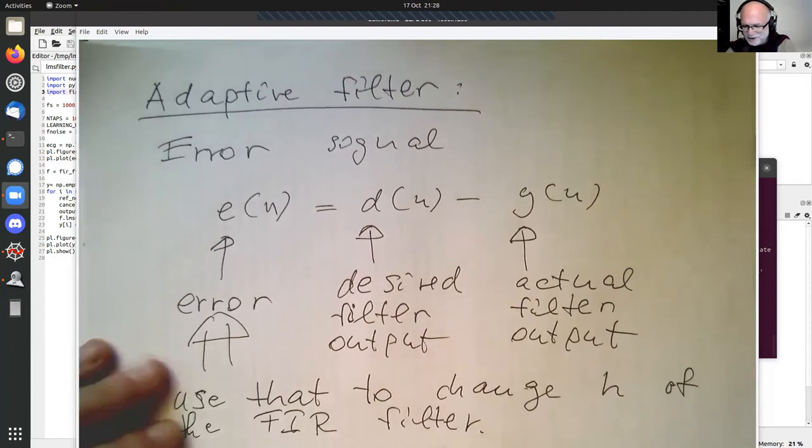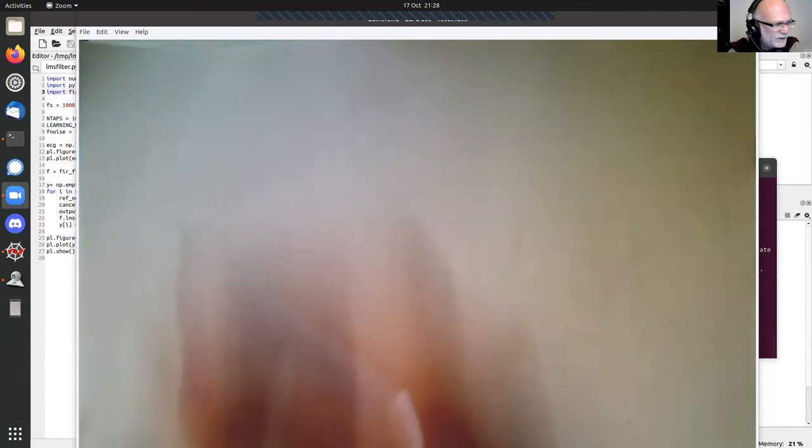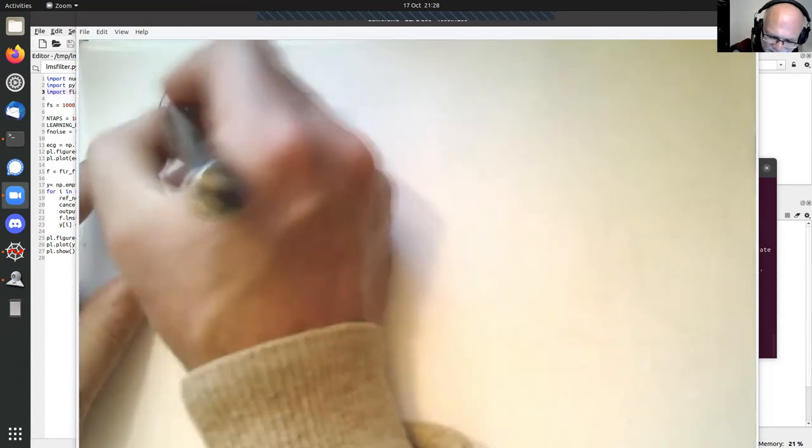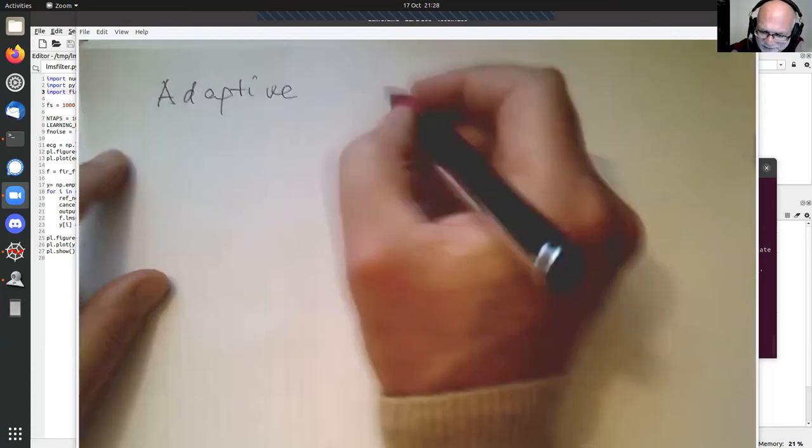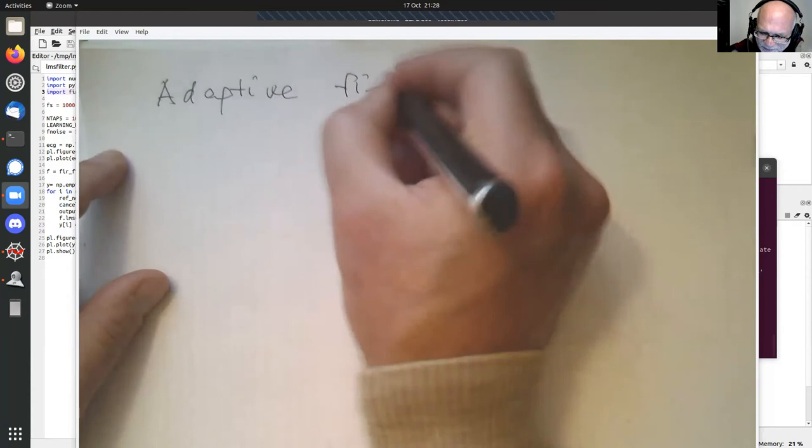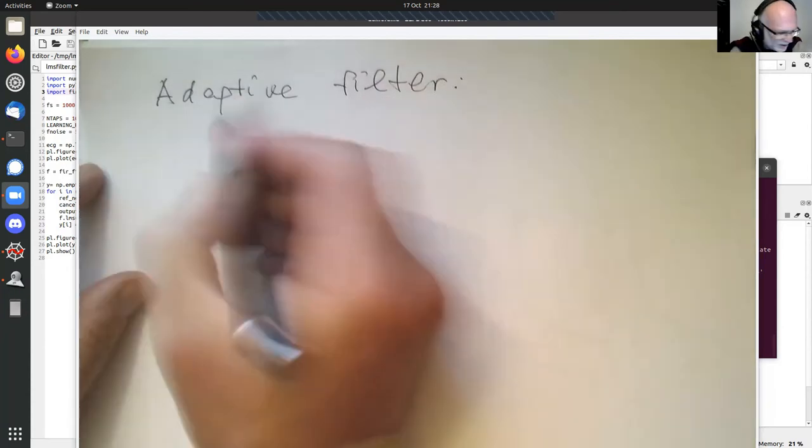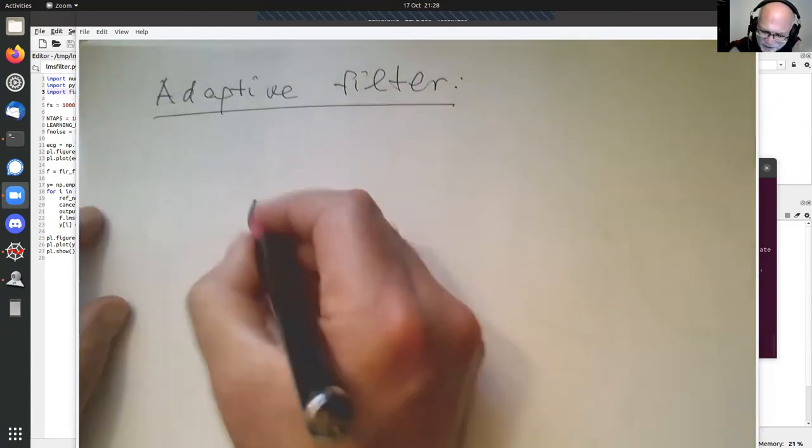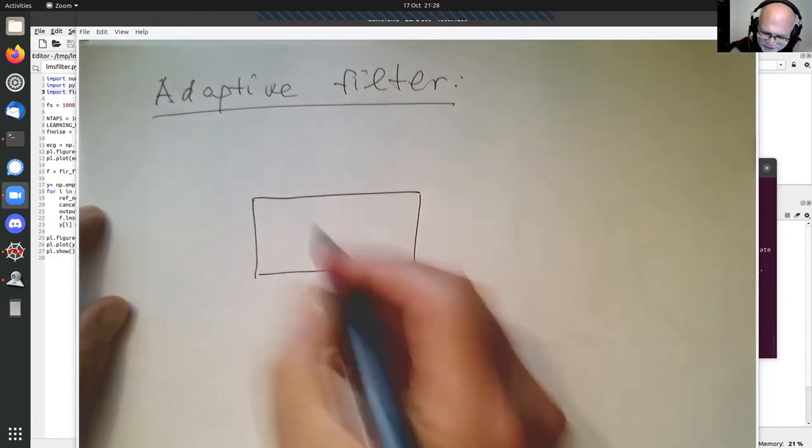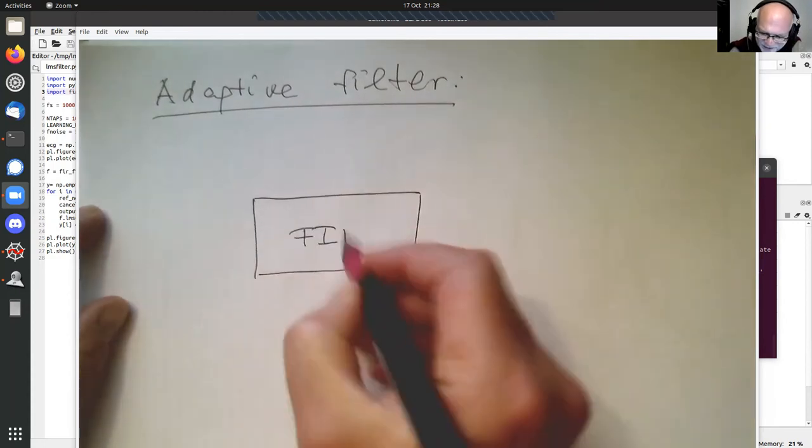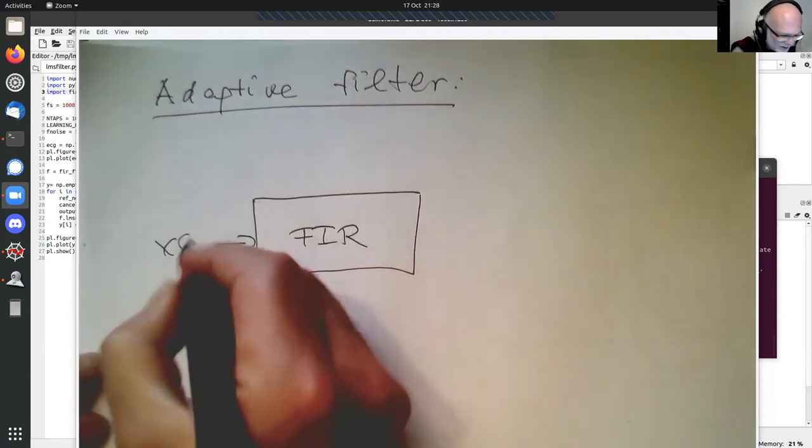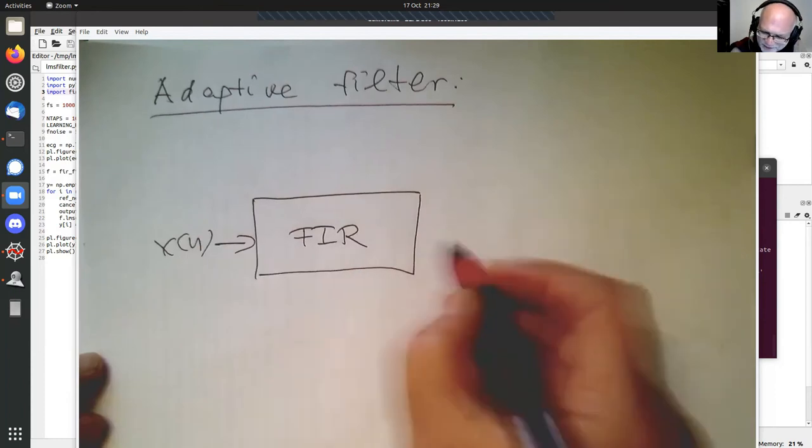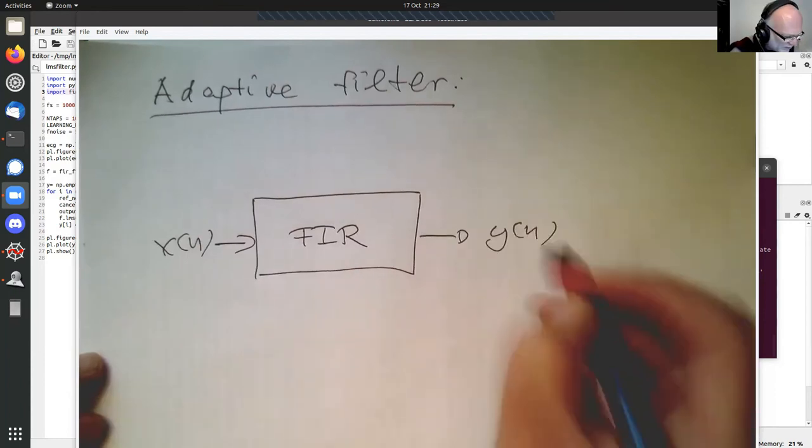So we can draw this as a simplified version. Adaptive filter. Let's just draw the FIR filter here as a box. And it gets this X of N, and then the output is Y of N.